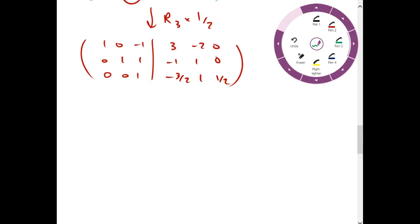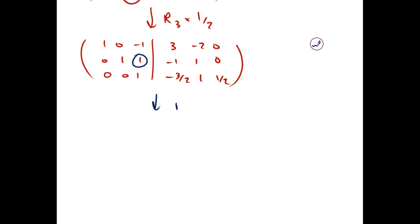And now we want to clear the space above it. So we're gonna get a 0 here. We're gonna take R1 and add R3 to it. So we get 1, 0, 0, 3 halves, negative 1, 1 half. And the other rows are unchanged.